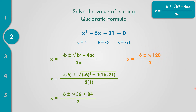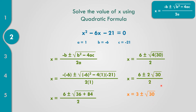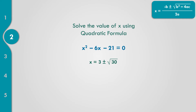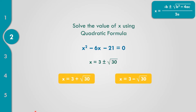What could be the factor of 120 having a perfect square? The factor is 4 times 30. So X equals 6 plus or minus the square root of 4, which equals 2, times the square root of 30, all over 2. Getting the lowest term: divide 6, 2, and 2 all by 2. That gives 3 plus or minus the square root of 30. So the solutions are 3 plus the square root of 30, and 3 minus the square root of 30.